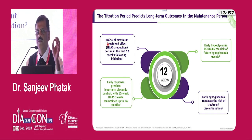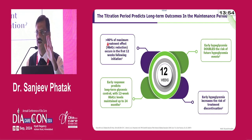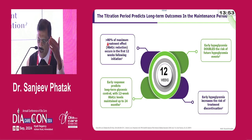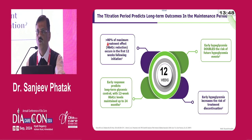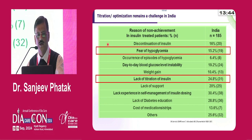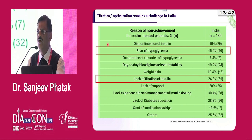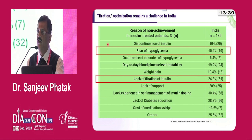Best control, best treatment effect, best event reduction, highest risk of hypoglycemia, and highest risk of discontinuation — all are highest in the first 12 weeks. That is why during this 12-week period we must be very vigilant, educating the patient and following up — either virtually or physically — to get the best effect out of insulin initiation treatment.